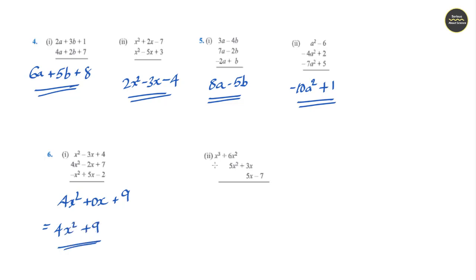Section 6, Question 2: There is only a single x cube term. 6x square plus 5x square is 11x square. 3x plus 5x is 8x, minus 7. So the full answer is x cube plus 11x square plus 8x minus 7.